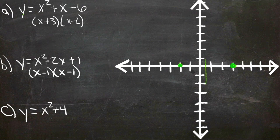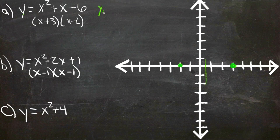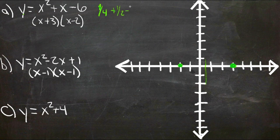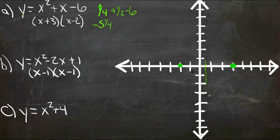If we plug 1 half in for x, we get 1 quarter (1 half squared) plus 1 half minus 6. So we get 3 quarters minus 6 or negative 5 and a quarter. Which means that our vertex is down here somewhere.